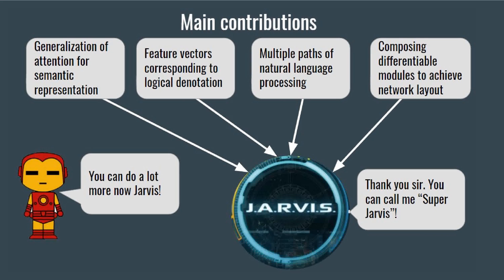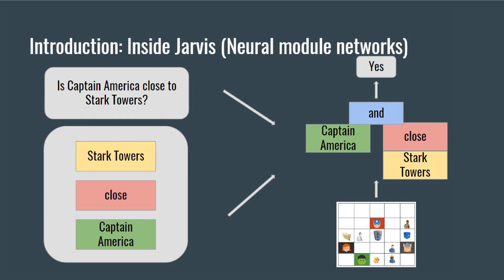Given a question, two things are learned: one, how to select the appropriate model to solve that question, and two, how to answer that question with the selected model. Simply speaking, reinforcement learning is used to choose the model and backpropagation is used for training.